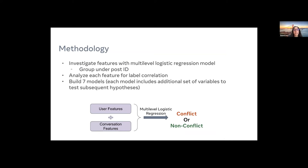For our analysis, because we have these paired samples, we investigate our features with a multi-level logistic regression model grouped underneath the post ID. For our user features and conversation features, we analyze these for their label correlation of either conflict or non-conflict. We build seven different models where the first model includes just the features from the first hypothesis, and each subsequent model contains an additional set of variables to test the additional hypotheses.